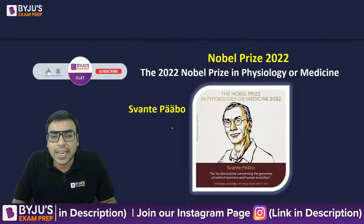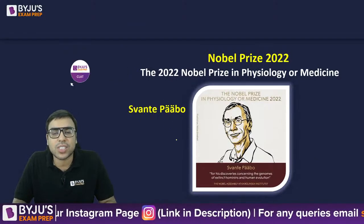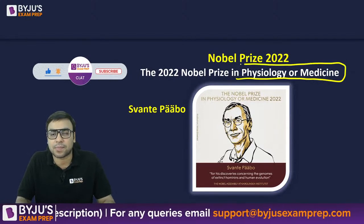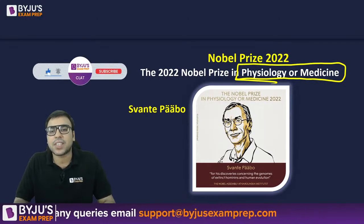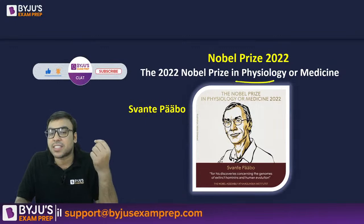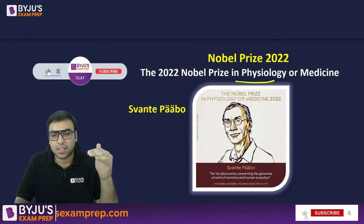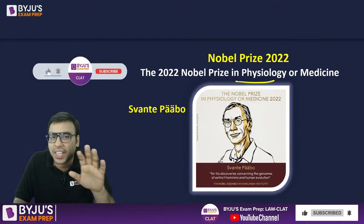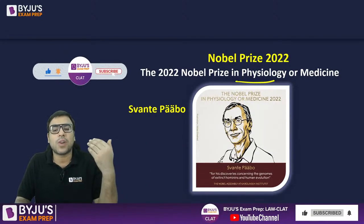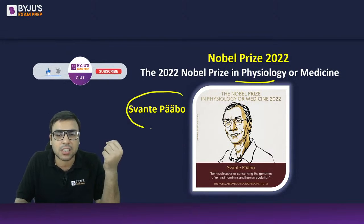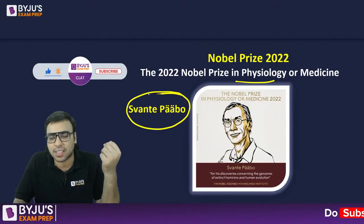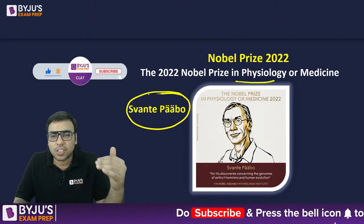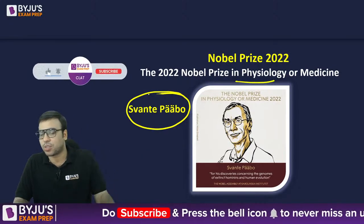Let's start with Nobel Prize in Physiology or Medicine. Please understand — it is Physiology, not Psychology. The Nobel Prize in Medicine and Nobel Prize in Physiology are the same thing. This time it has been given to Svante Pääbo.